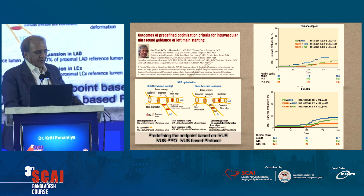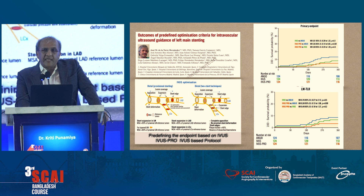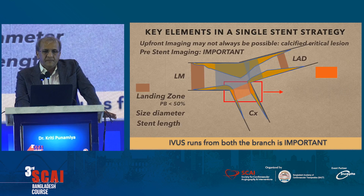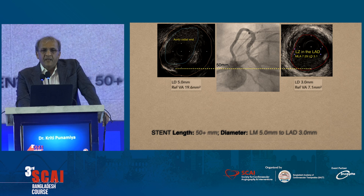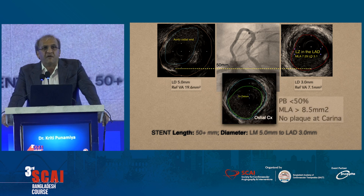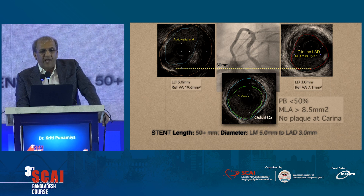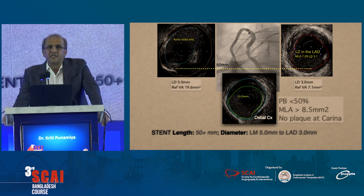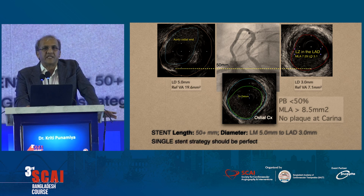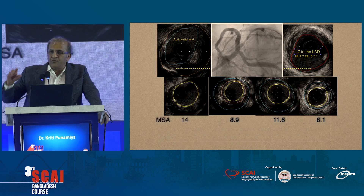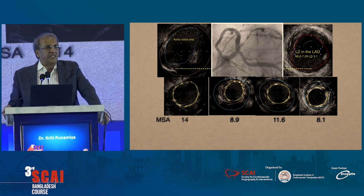This paper showed that when you plan a case like this and determine your endpoints before you engage into the left main, you are going to reduce mortality and make your life simple. Going back to our case, the most important question was: what does our circumflex look like? Our circumflex ostium shows a plaque burden of less than 50%, an MLA of 8.5, and no plaque at the carina. The carina is right here because this is the LAD. It's a thin carina, which means this is going to be a very forgiving circumflex — it is going to be okay to do a single-stent strategy, and you won't need a two-stent strategy.